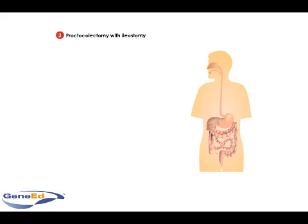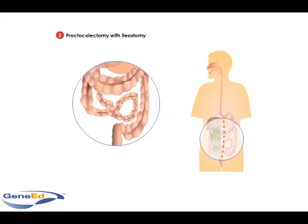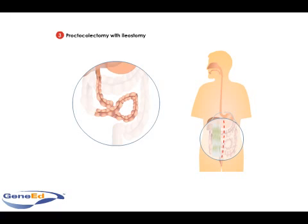Proctocolectomy with ileostomy involves the removal of the entire large intestine, rectum, and anus, but the ileum is left. An ileostomy follows, in which the free end of the ileum is connected to the stoma, allowing a path to the surface of the body. This is the route by which feces are expelled.